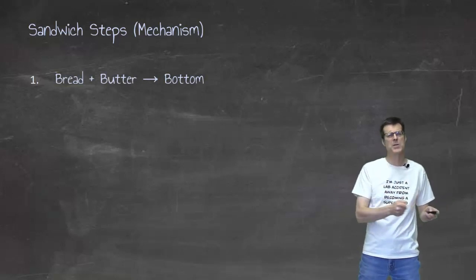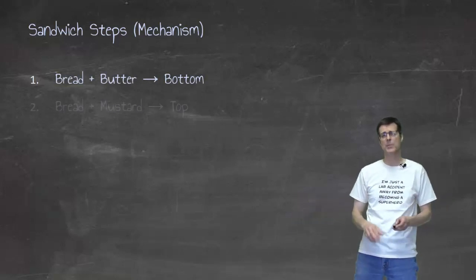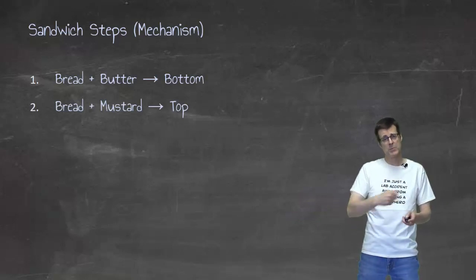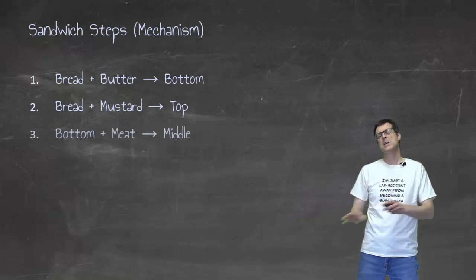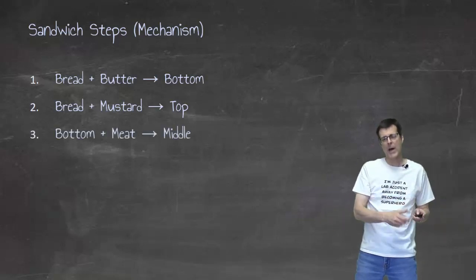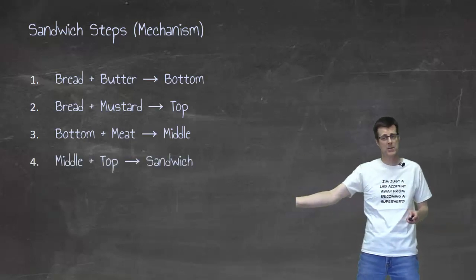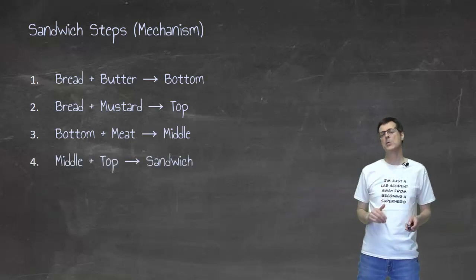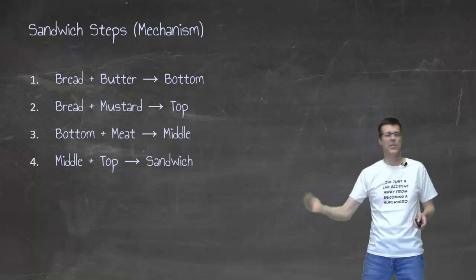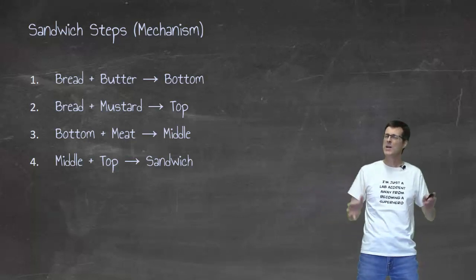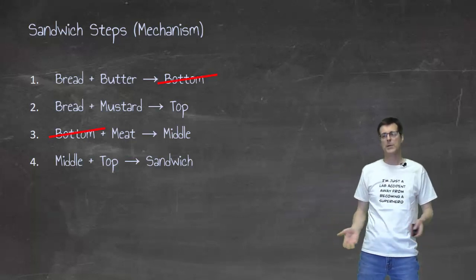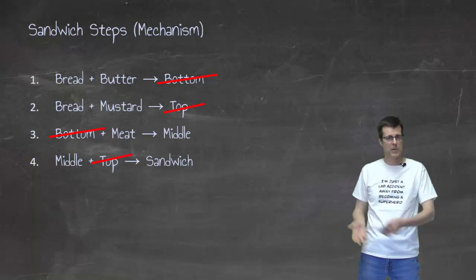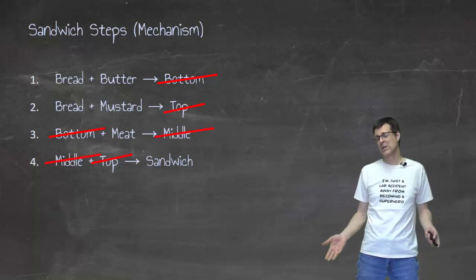So what you do is you take a piece of bread and put some butter on it. You set that aside and that is now the bottom. Then you take another piece of bread and put some mustard on it, and you set that aside as the top — the top, because I'm not a psychopath. Then you take that bottom, bring it back, and add the meat on top of that. That is now the middle of the sandwich. Then you take that top that you made earlier and stick that on top of the bottom, on top of the middle, and that is your sandwich. The bottom got used up, the top got used up, and the middle got used up.